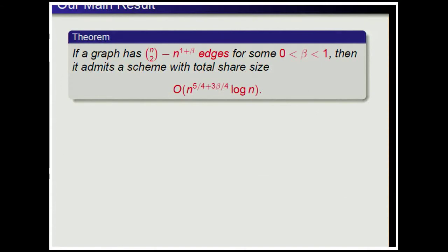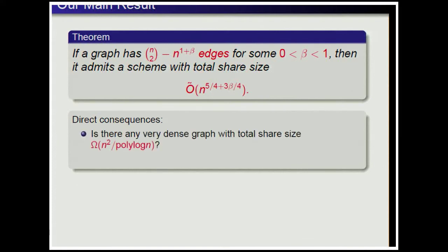Our main result is the following theorem: if a graph has N-choose-2 minus N to the 1+β edges for some β between 0 and 1, then it admits a scheme with total share size big-O-tilde of N to the 5/4 + 3β/4. Since the best total share size is N, we can view this as N times N to the 1/4 + 3β/4 (ignoring logarithmic factors). As a direct consequence, there is no very dense graph with total share size big-Omega of N squared divided by polylog N — so the answer to our question is no.